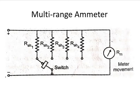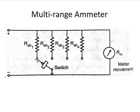The next topic is the multi-range ammeter. Instead of using a single shunt resistance, we introduce multiple shunt resistances R_SH1, R_SH2, R_SH3, R_SH4, and a switch. Whenever a particular shunt resistance is required, the switch is set to that position — R_SH1, R_SH2, R_SH3, or R_SH4. This is the multi-range ammeter.